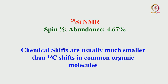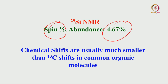We discussed a lot about phosphorus NMR and fluorine NMR. Now we switch to another important isotope: silicon. Silicon NMR is very often done, especially when working with glasses and zeolites — silicon and aluminum NMR are routinely done. Silicon is a friendly nucleus, spin-half, with an abundance of 4.67 percent. Chemical shifts are usually much smaller than carbon-13 chemical shifts in common organic solvents.